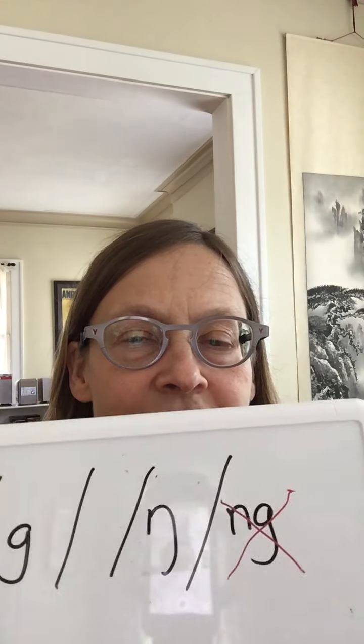To hear the difference, say the word 'thin' — feel where your tongue is. Your tongue is up there. Then say 'thing' — it's the back of your tongue making that sound. To learn to say NG at the beginning of a word, say 'sing-ng, sing-ng,' and you can start to isolate it. That is the NG sound.